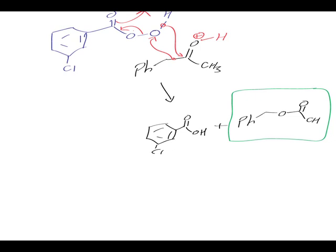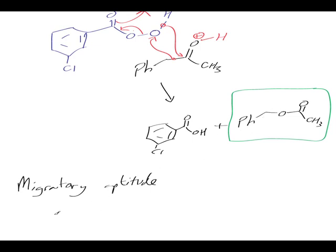The reason we've got that product and not the oxygen going in on the other side is because of what's called migratory aptitude — which basically means more electron-rich species tend to migrate rather than electron-deficient species. The species capable of stabilising a positive charge will migrate preferentially. In this case, we had a phenyl group which could easily stabilise a positive charge because the electrons can come out of the phenyl ring.